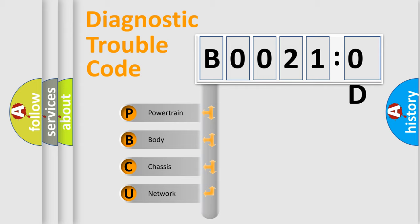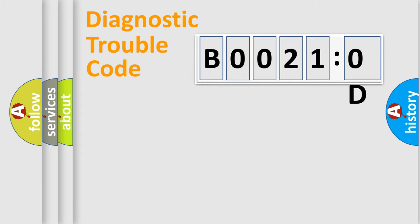We divide the electric system of automobile into four basic units: Powertrain, Body, Chassis, and Network. This distribution is defined in the first character code.